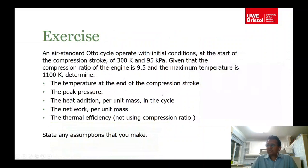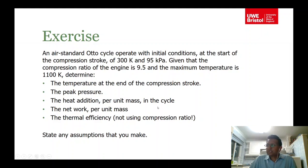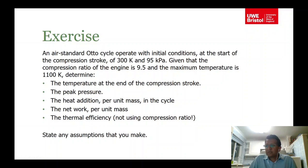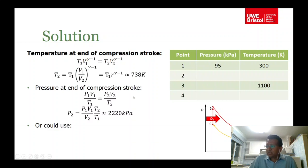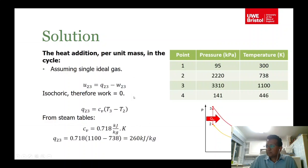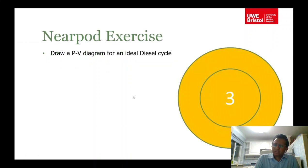As an exercise, consider an air-standard Otto cycle operating at 300 K and 95 kPa, with a compression ratio of 9.5 and a maximum temperature of 1100 K. Calculate the temperature at the end of the compression stroke, the peak pressure, heat addition per unit mass, net work per unit mass, and thermal efficiency. Here is the solution — you should try it first.